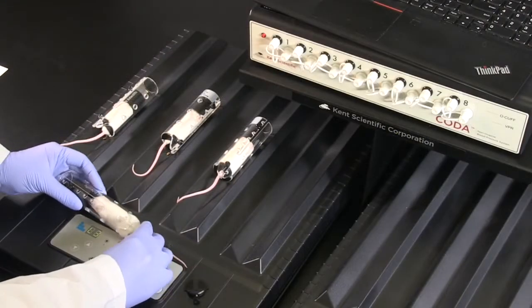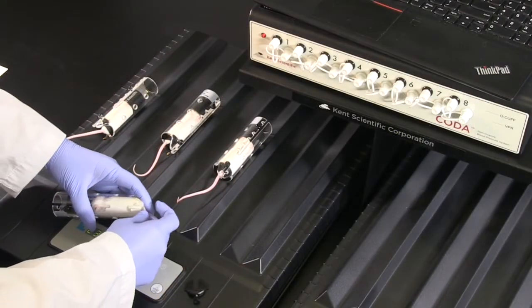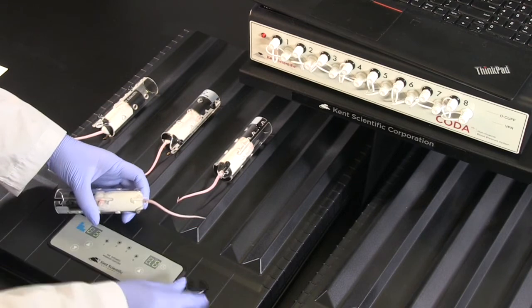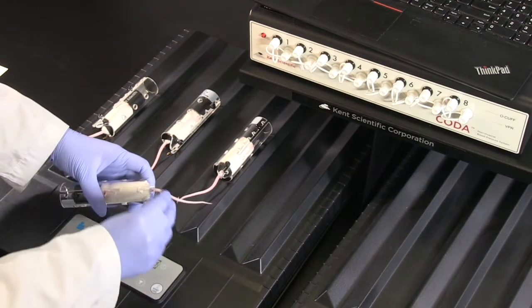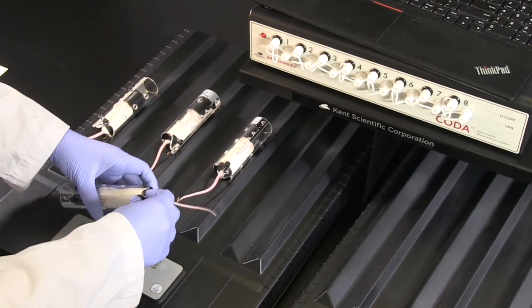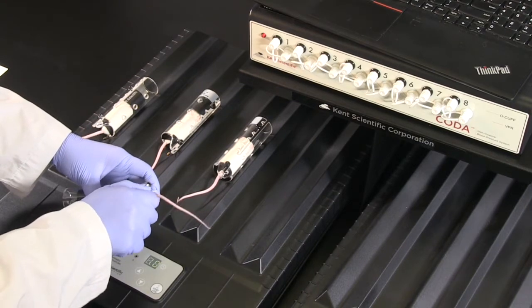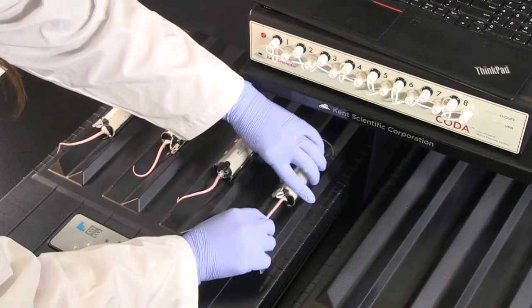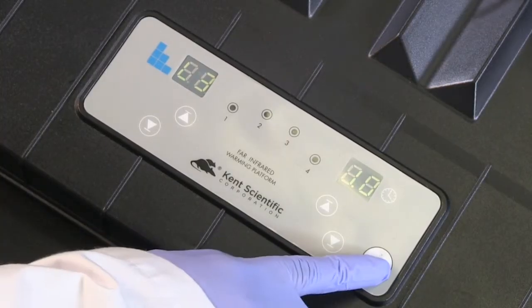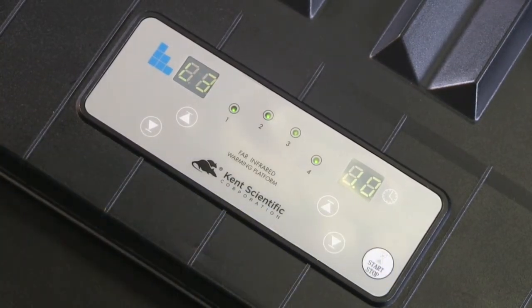The animals require a few minutes of acclimation time before taking blood pressure measurements. This acclimation is important to ensure proper tail blood flow and to reduce any effects of handling and restraint stress. To save time, gently place your animals into the CODA holders and turn on the warming platform to acclimate the animals during the software setup process.